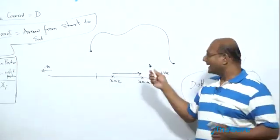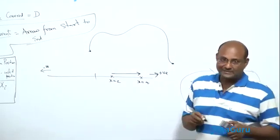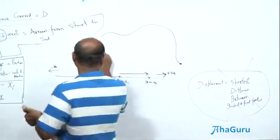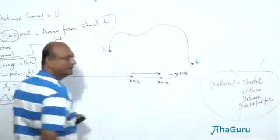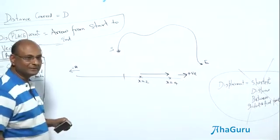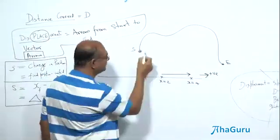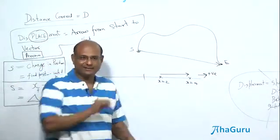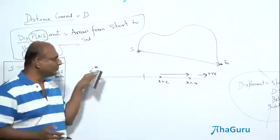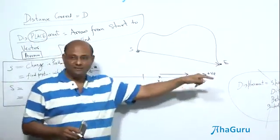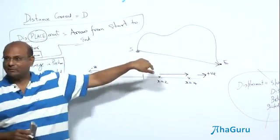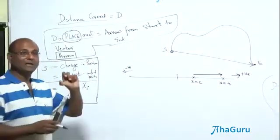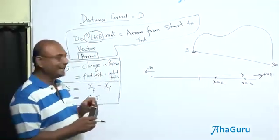I start here, I end there — this arrow is the displacement. This arrow has a length and also has direction. Now if this is where I started and this is where I ended, the displacement arrow — even if it is bent — is still a straight arrow with some direction. Does the arrow tell you the direction? Yes, the arrow has both length and direction.